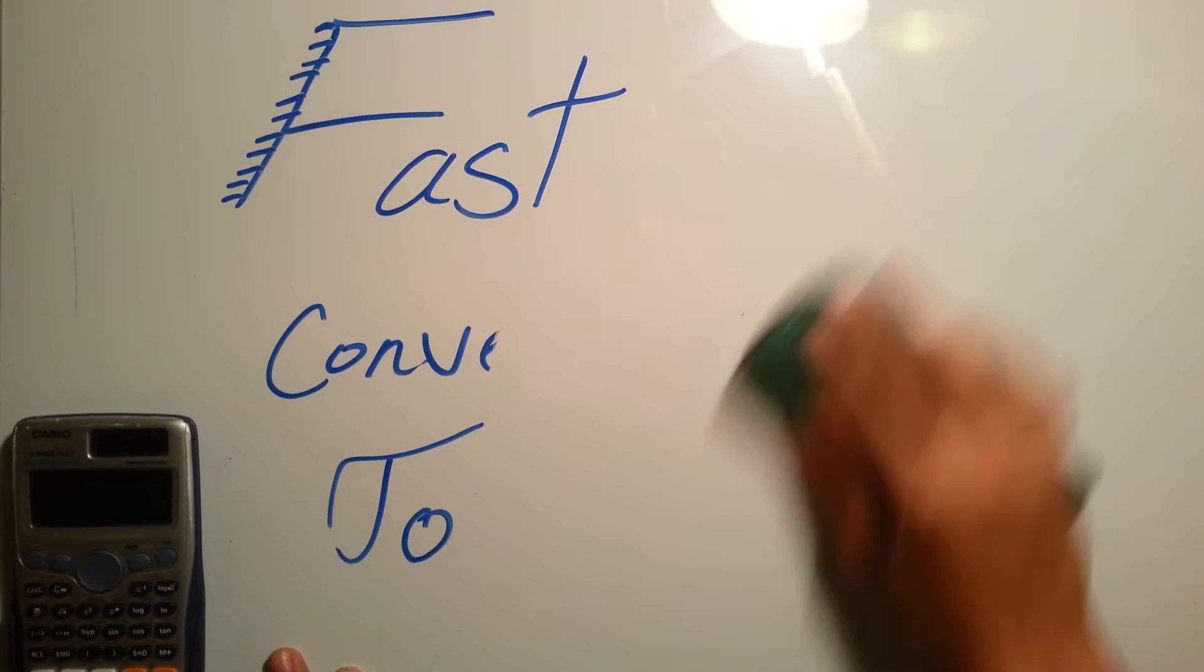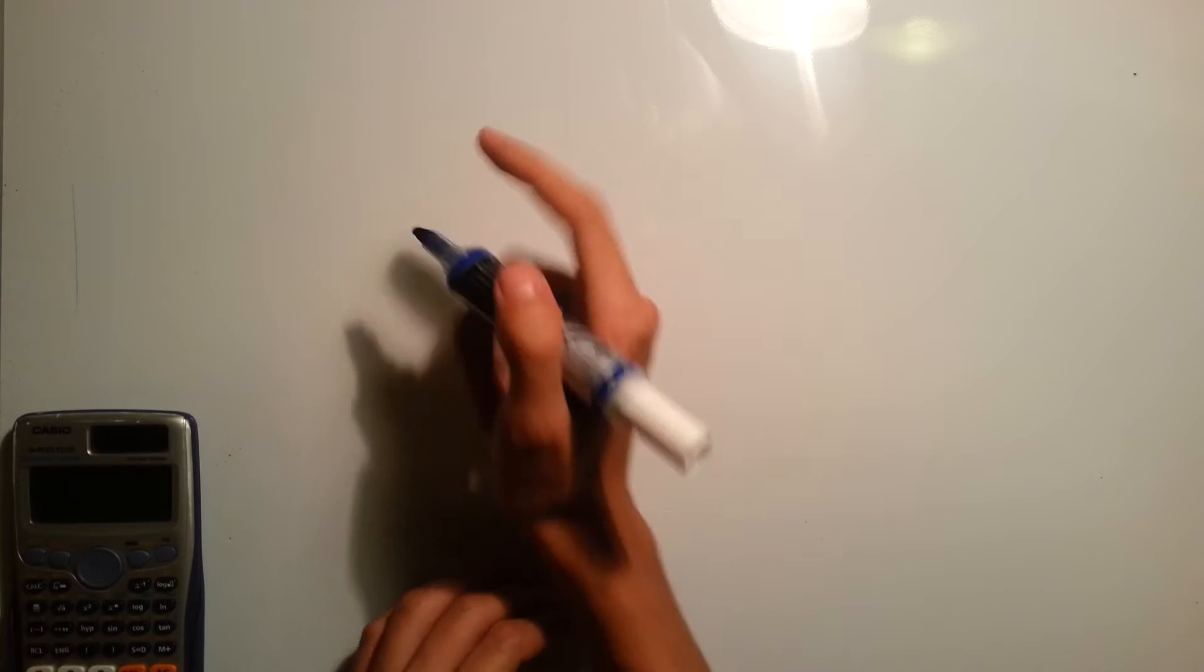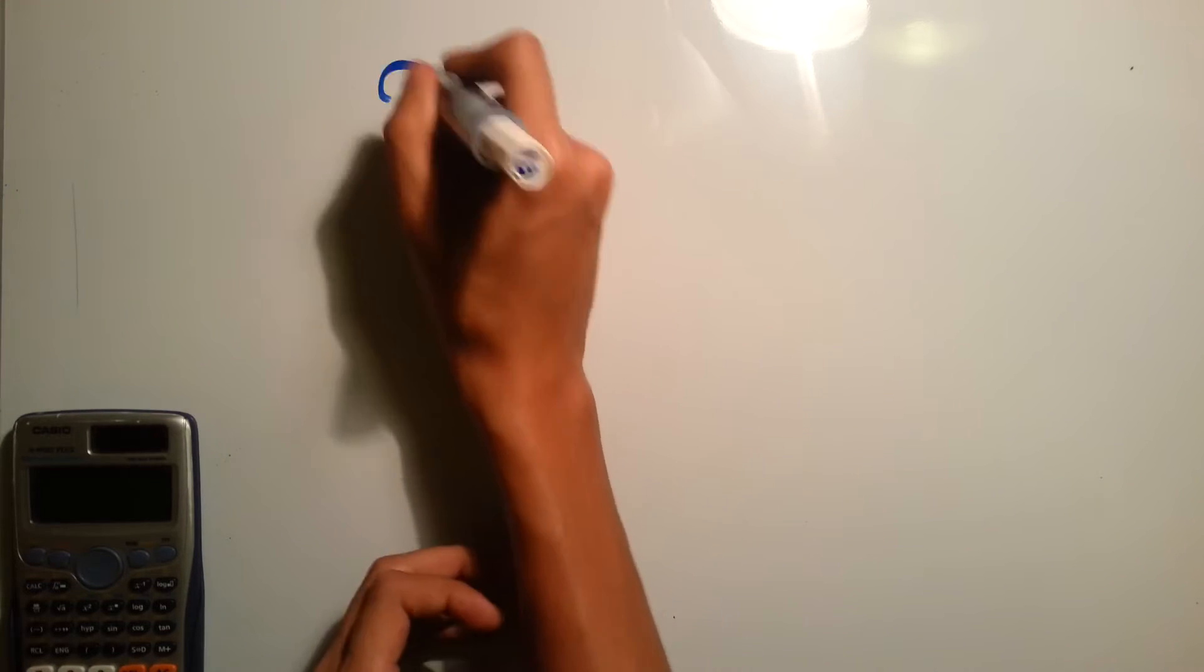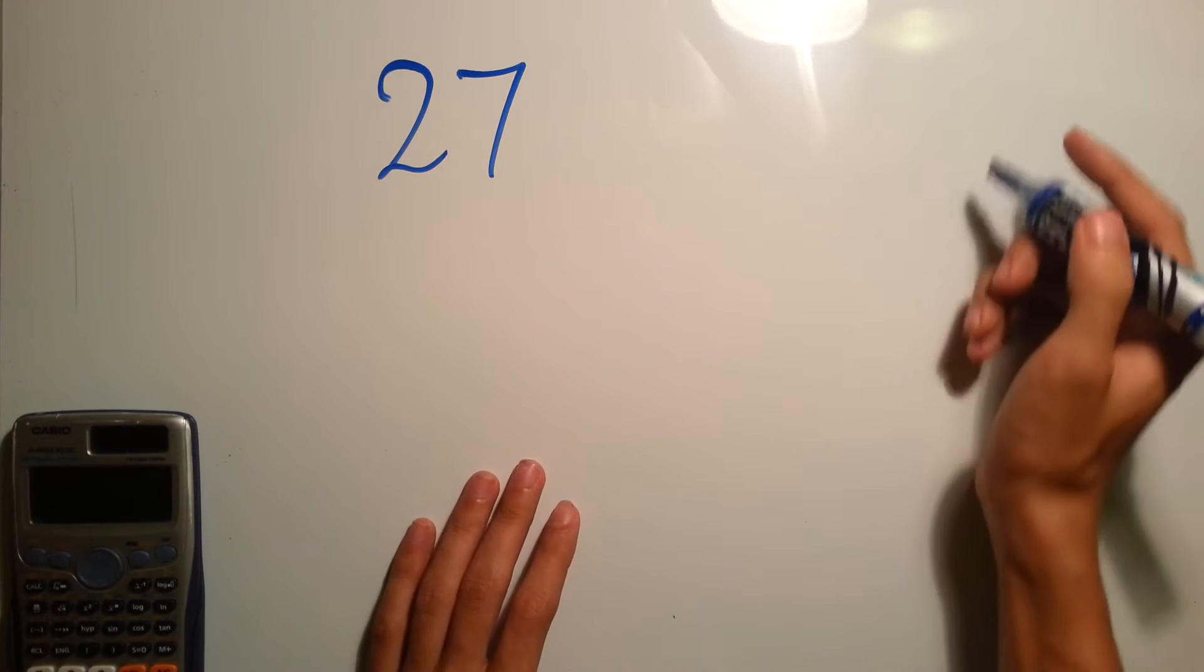It only works with small values, like maximum the value of five binary bits. So let's say you have the number 27, and you already know that for five bits you can have 1, 2, 4, 8, 16.